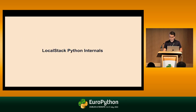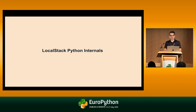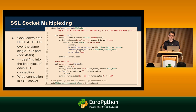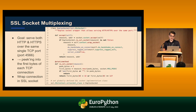I want to talk about the Python internals, which may be interesting for those with a Python background. There are a few patterns we've established along the way. The project has been around for quite some time and the codebase has grown organically. Some highlights: first, SSL socket multiplexing. One use case we often have is wanting to expose port 4566 both as HTTP and HTTPS.